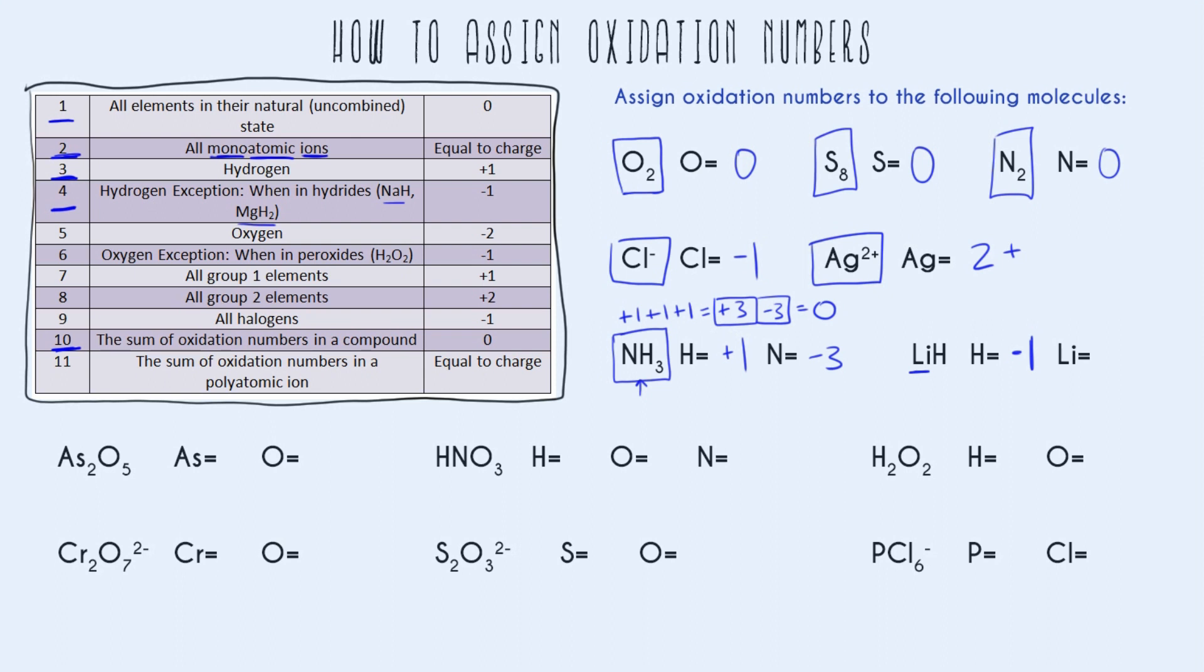Once again, following rule number 10, we know that the sum of oxidation numbers in a compound is zero. So we know whatever hydrogen's oxidation number is plus lithium's oxidation number equals zero. We know that hydrogen is negative one. So the only thing that lithium can be is positive one. So that's the oxidation number for lithium. Now another way we could have done that is to say lithium is a group one element, and that means that its charge is going to be plus one.